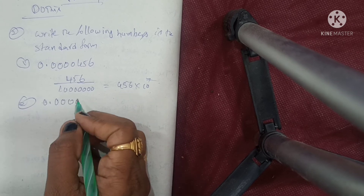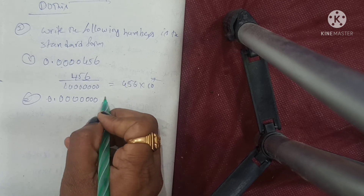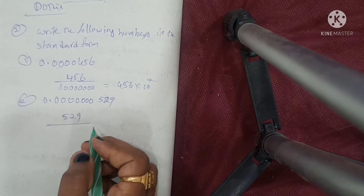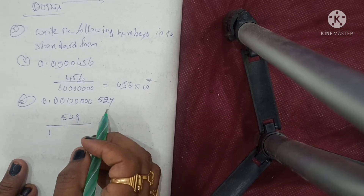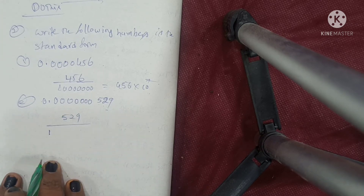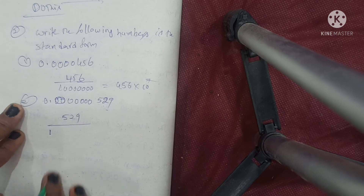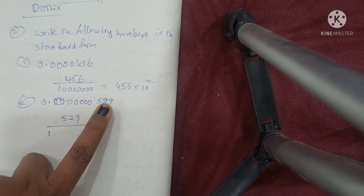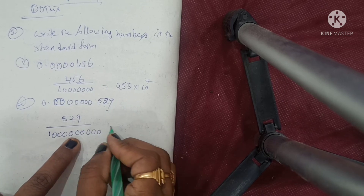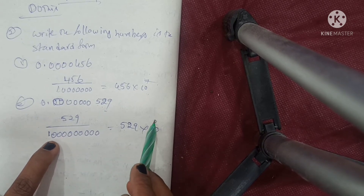Second: 0.000000529. After the decimal, count: 1, 2, 3, 4, 5, 6, 7, 8, 9 — but zeros only are 6, plus this gives position 9. How to write: 5.29 into 10 to the power of minus 9.